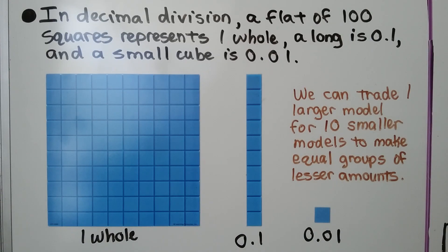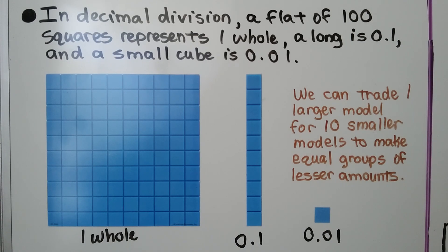In decimal division, a flat of 100 squares represents one whole. A long is one tenth, and a small cube is one hundredth. We can trade one larger model for 10 smaller models to make equal groups of lesser amounts.